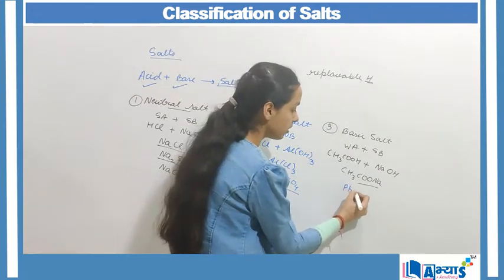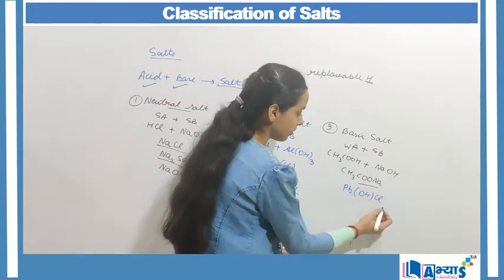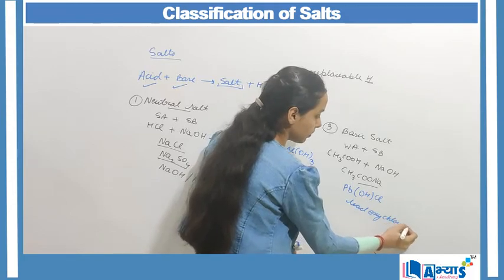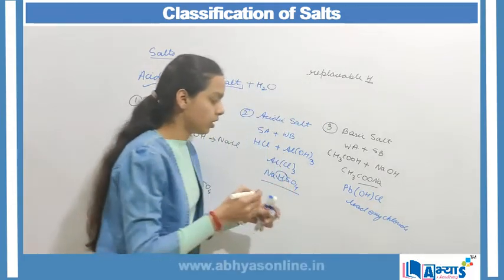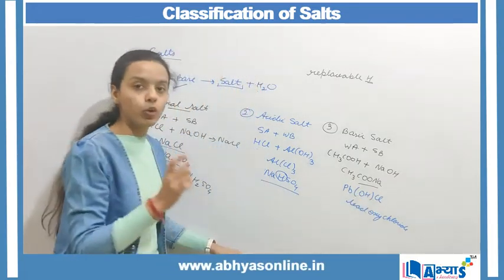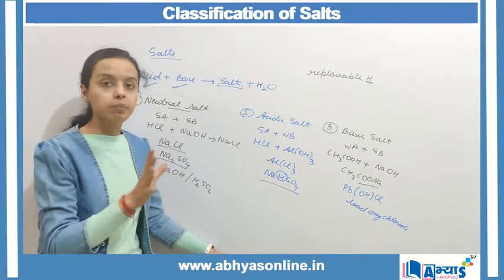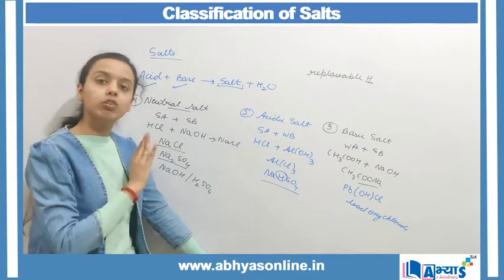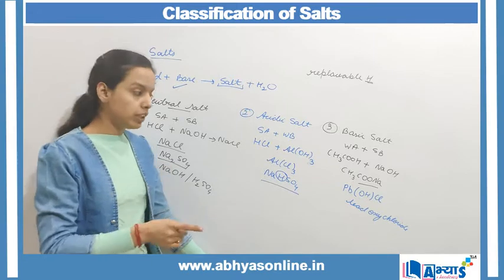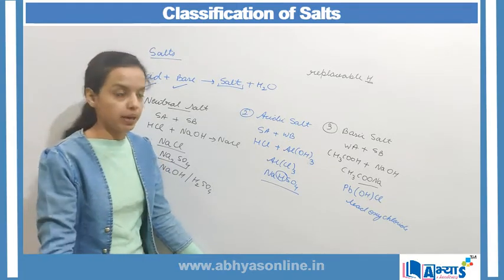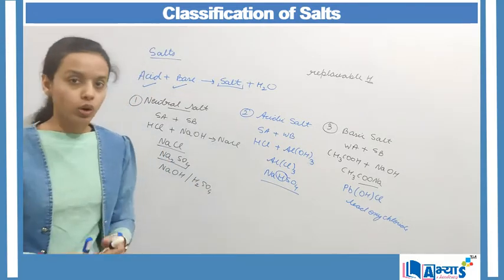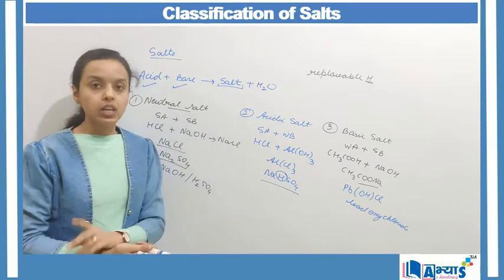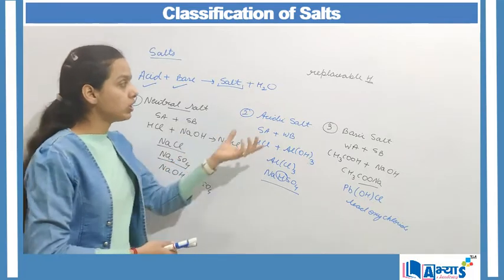Coming on to the basic salt: the best example is lead oxychloride. In this case, the OH part — which always comes from the base — has still been left. This is only possible when the acid was not enough to neutralize the base, which means the acid was the weaker part and the base was the stronger part. So these are the three important classifications of salt, discussed both in terms of the strength of acid or base and in terms of replaceable hydrogen.